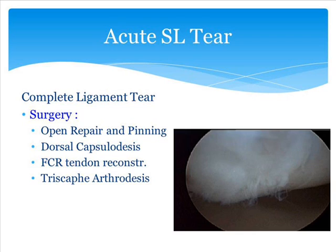When we find patients with complete tears, we have to think about doing surgical repair. In the acute setting — usually within six weeks of diagnosis — a primary repair of the ligament is the best option. That involves an open incision on the wrist to find the ligament tear and repair it, and ultimately pinning the bones together to hold the repair stable for typically about three months. Other options include adding tissue or capsule to the repair by dorsal capsulodesis. In the chronic setting, a tendon reconstruction can be done, or potentially fusing some of the bones together, though that's less popular.